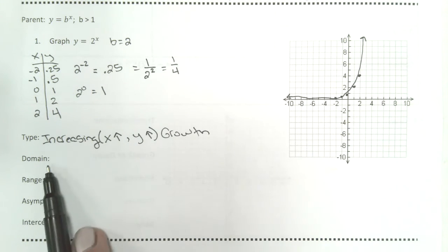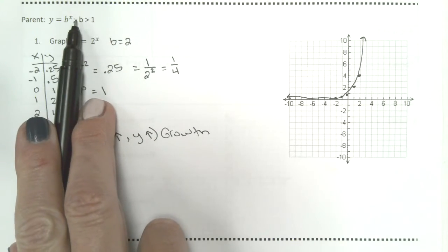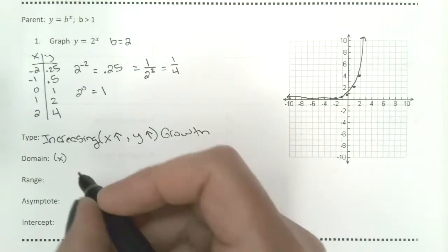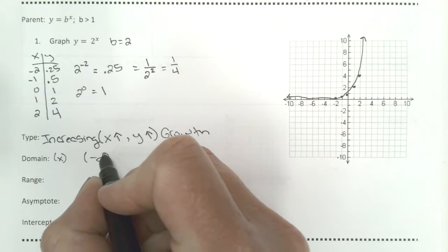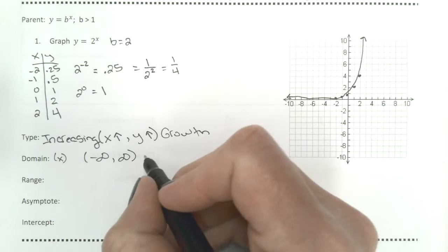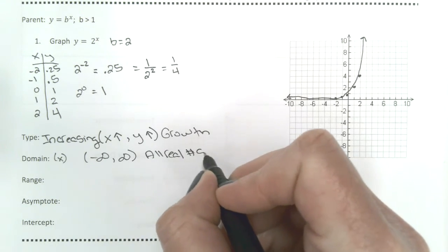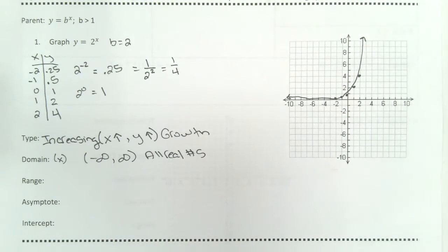The domain. Domain, remember, are your x values. What could I plug in place of x? Anything that I want. So the domain goes from negative infinity to positive infinity. Or we would say all real numbers.